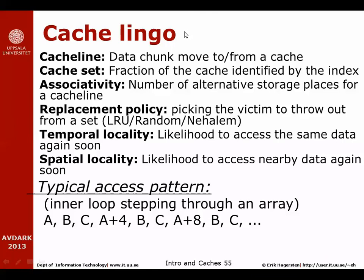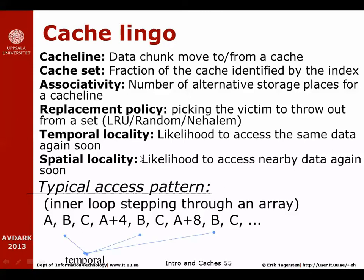A little cache terminology review: a cache line is the chunk of data moved to and from caches or between caches and memory. A cache set is the fraction of the cache identified by the index function. Associativity is the number of alternative storage places for a cache line within the set. Replacement policy picks the victim from the set — we talked about LRU and random. Two kinds of locality make caches work: temporal locality — you're likely to access the same data soon again — and spatial locality — you're likely to access nearby data soon again.